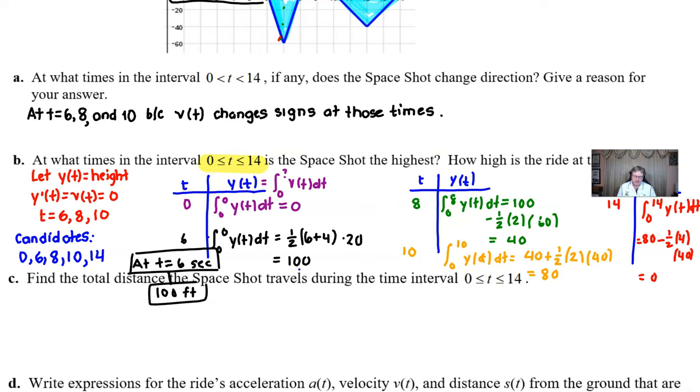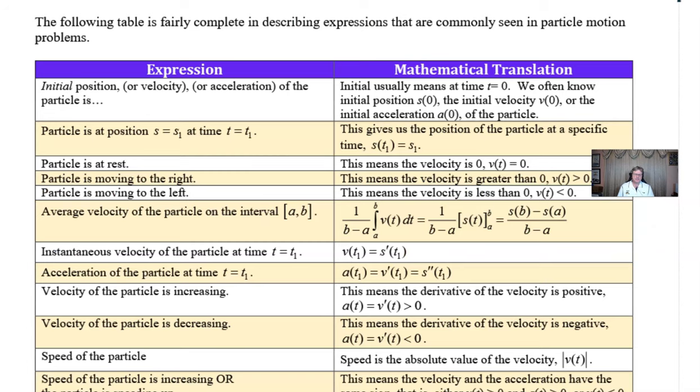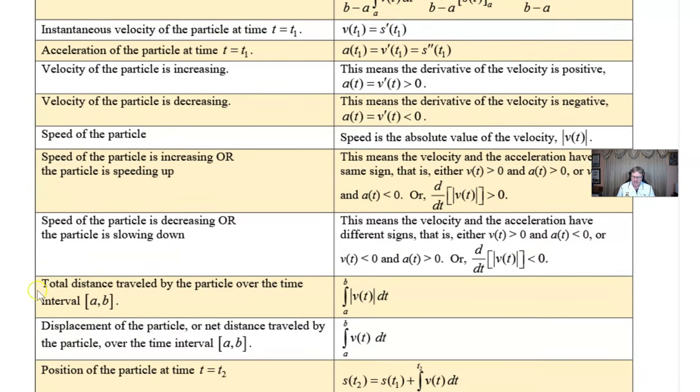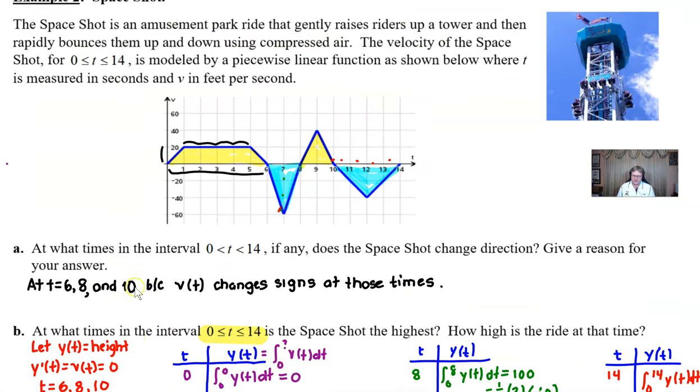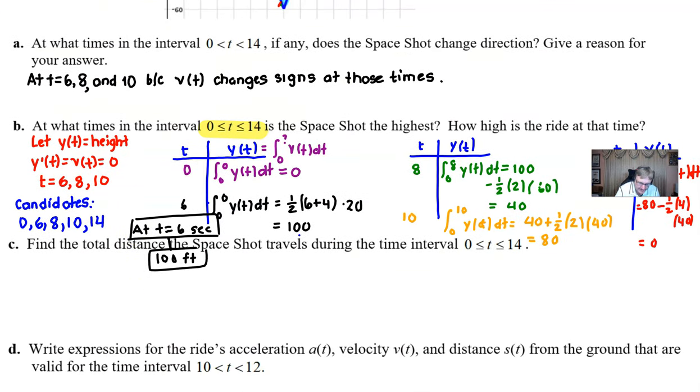Part C: find the total distance the space shot travels during the time interval. The total distance. Now we had a little bit of a lesson on total distance at the beginning of our video series here. But just to show you, if you were to look back here into this particular table, if we look for total distance, they pretty much tell you what the setup is going to be. And we learned before that we need to take the integration of the absolute value of velocity. Otherwise we might just get displacement. So always integrate speed or absolute value of velocity to get total distance. So for our particular problem, find the total distance traveled from time 0 to time 14. What we are going to do is integrate from 0 to 14, absolute value V(t).